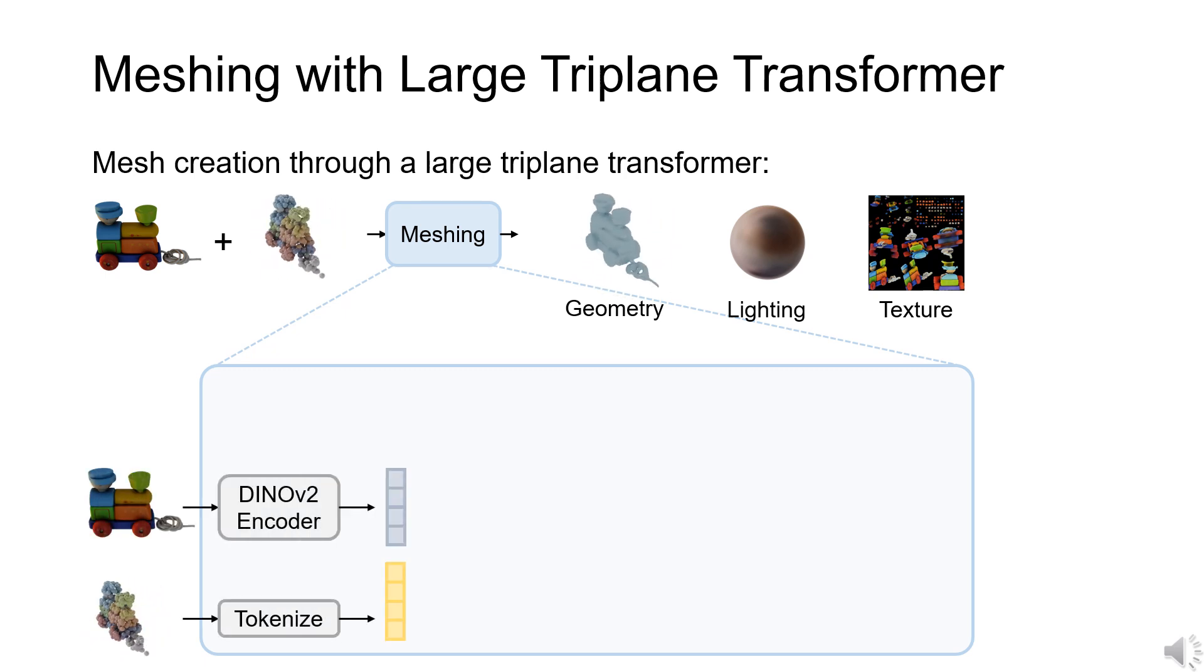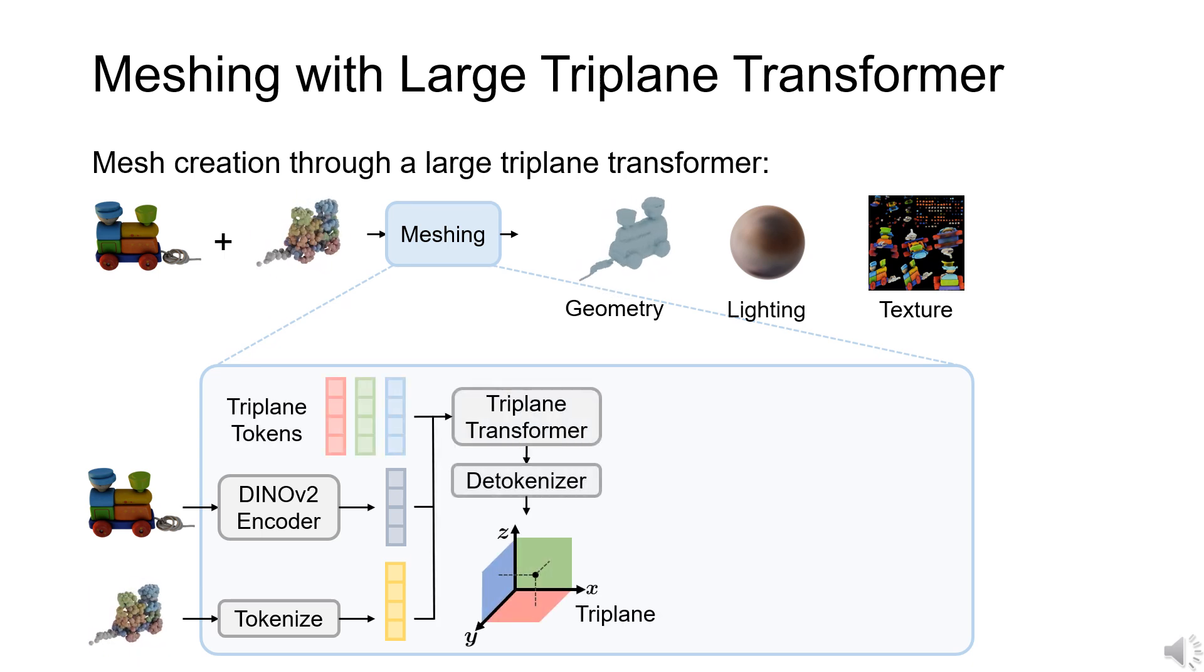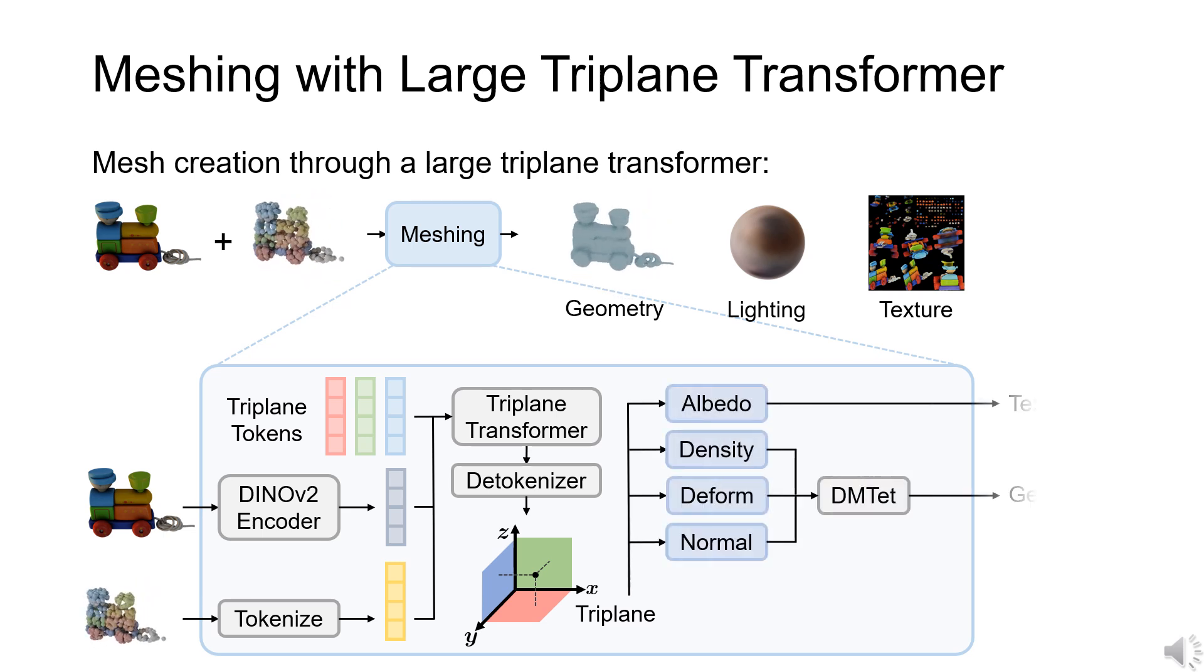The learnable initialization of the triplane tokens is then processed by the triplane transformer conditioned on the latent vectors. We query the triplane with MLPs to obtain albedo, density, deformation, and surface normal, which are converted to a textured mesh with DMTET.